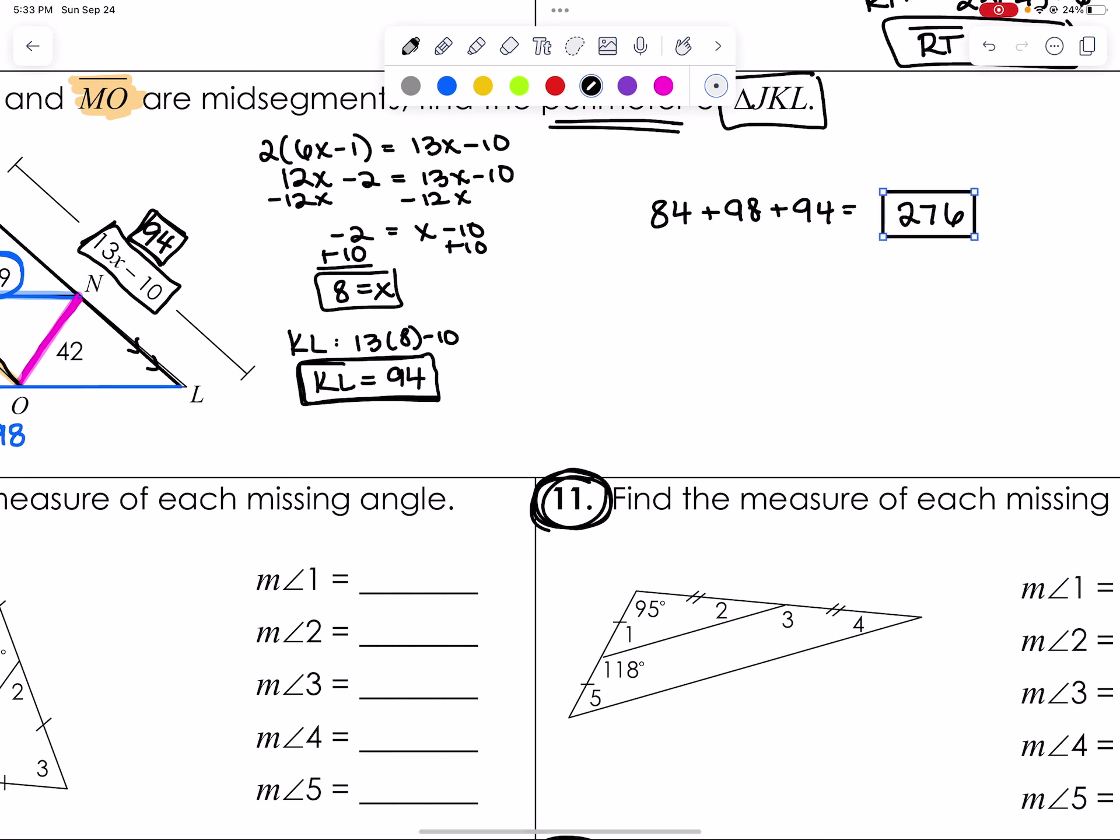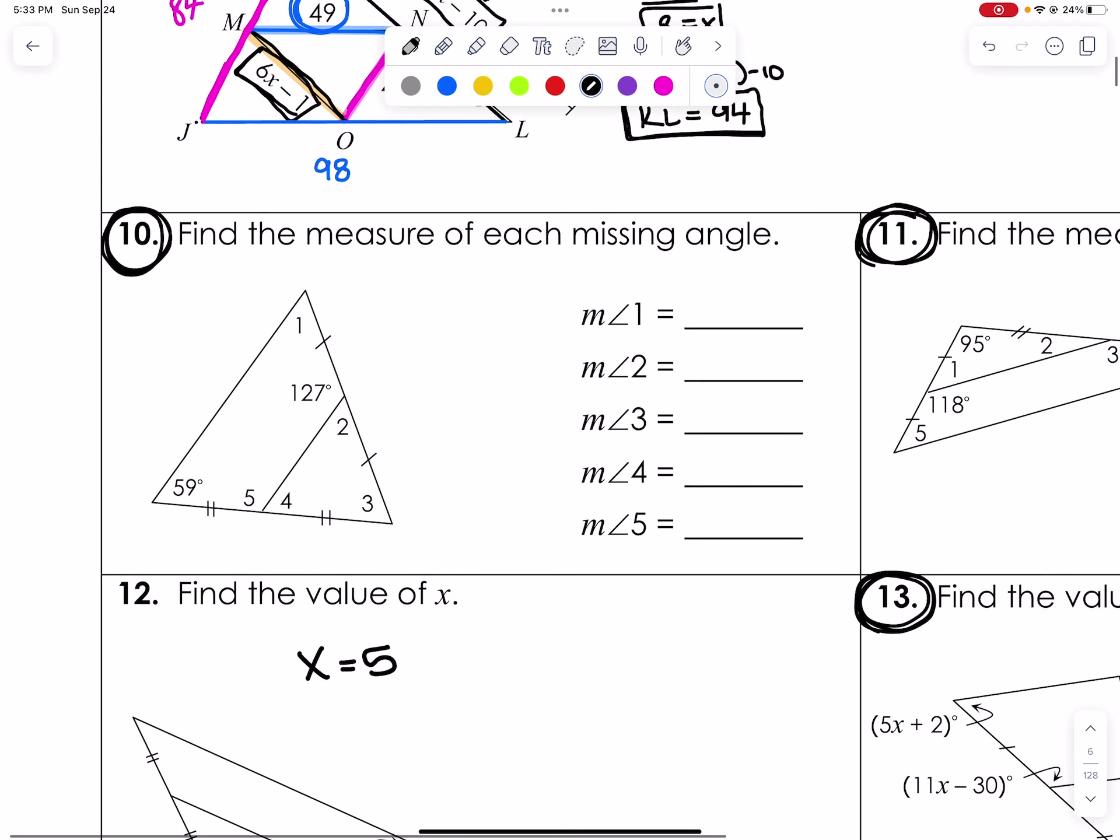So now I take all of those. Do 84 plus 98 plus 94. And my final answer is 276. Again, there's no units here, so you can just write 276. If that is not something you're understanding, again, please, please, please mark it so that we can talk about it.